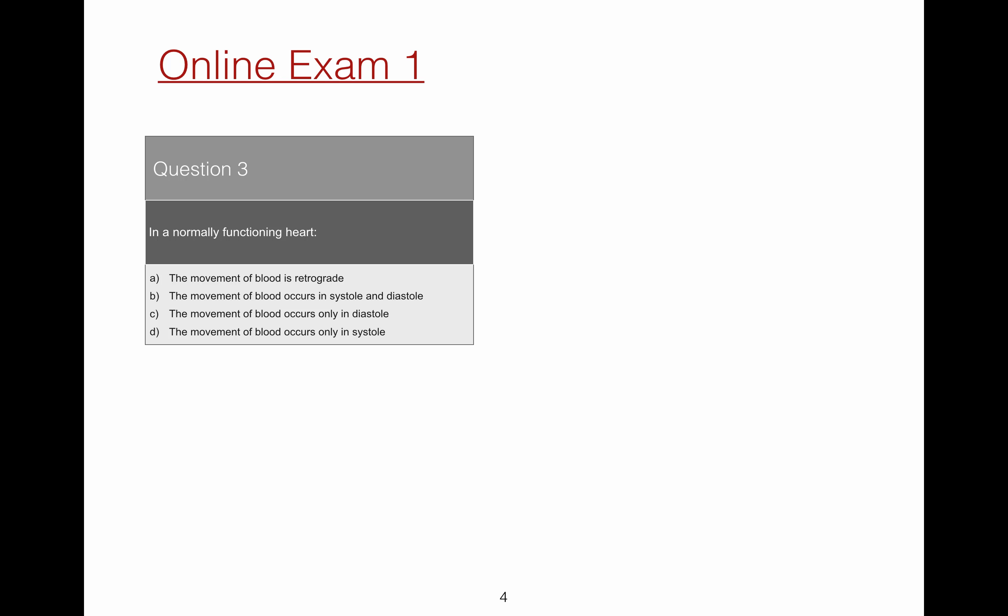Question 3. In a normal functioning heart, the movement of blood occurs in both phases of the cardiac cycle. That is, it occurs in systole and diastole.